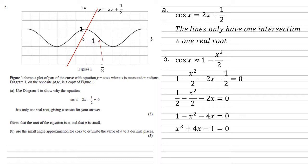Rearranging to give positive x squared, we get x squared plus 4x minus 1 equals zero.